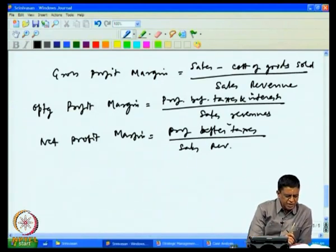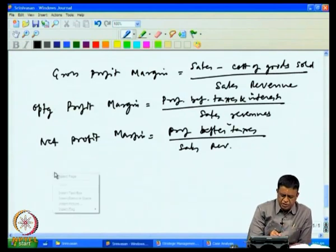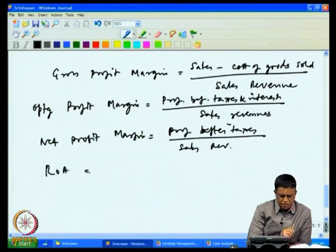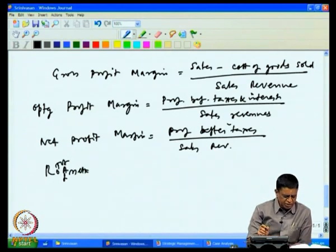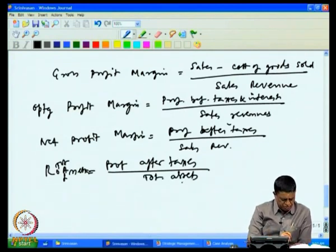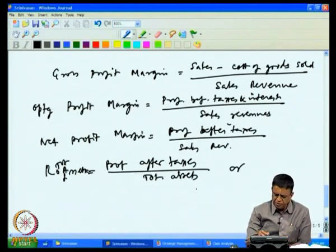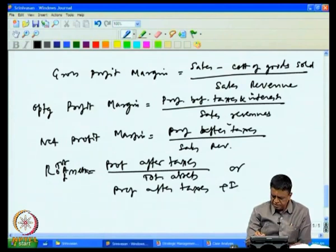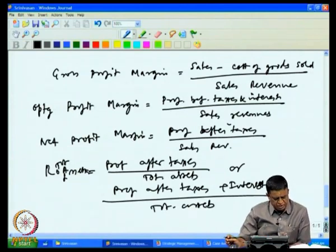Each one of these ratios — gross profit margin, operating profit margin, net profit margin — has these types of implications. The next one we are interested in is what we call the return on total assets. The return on total assets is equal to profit after taxes divided by total assets, or alternatively profit after taxes plus interest divided by total assets.